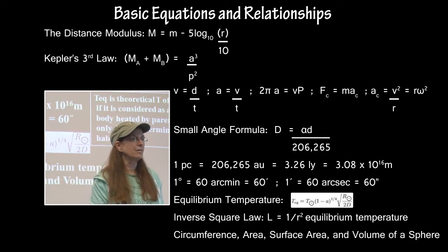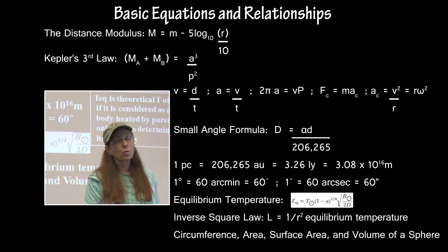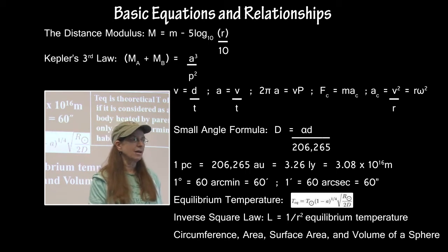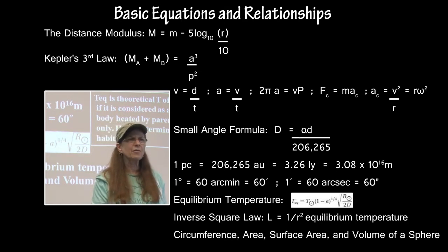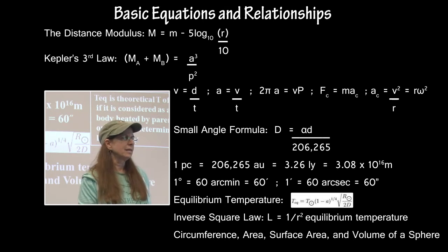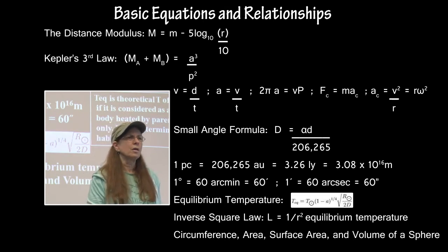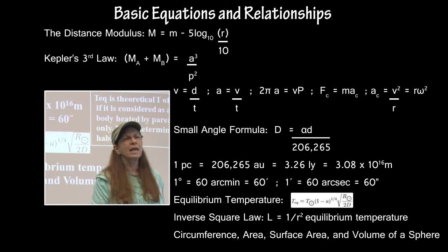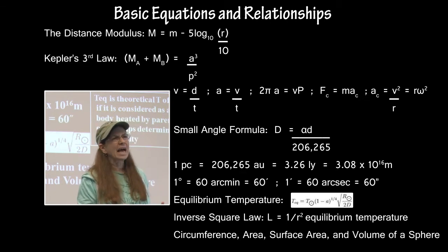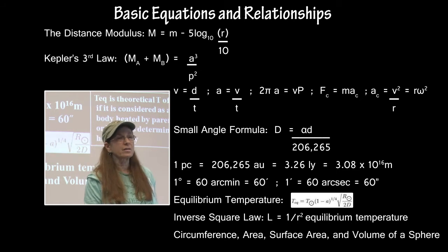It's been on there every single year: the inverse square law, and just understanding basic circumference and area, surface, the volume of the sphere. The only equation specific to exoplanets is the equilibrium temperature, which is basically a theoretical temperature that a planet would have if it acted as a black body receiving radiation only from its parent star and then emitting that radiation away.